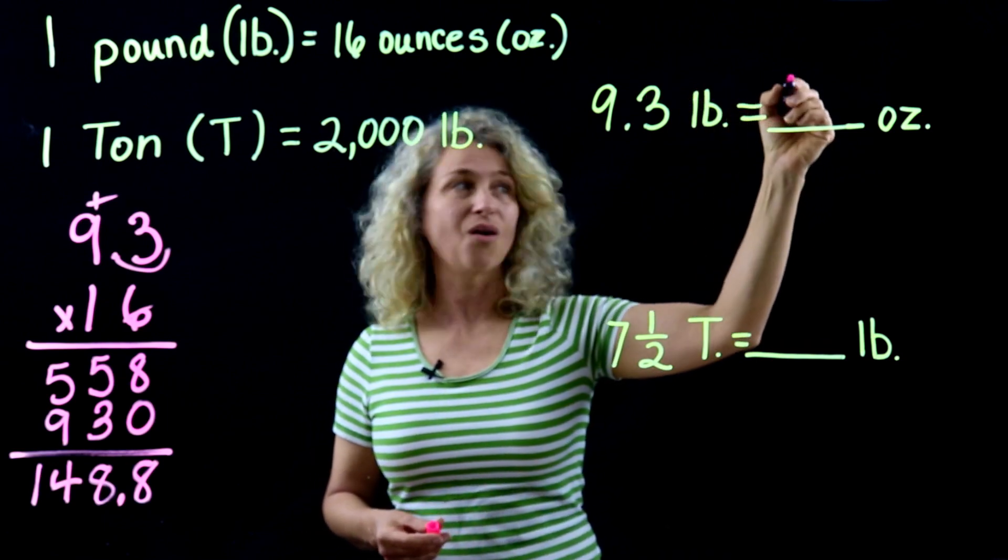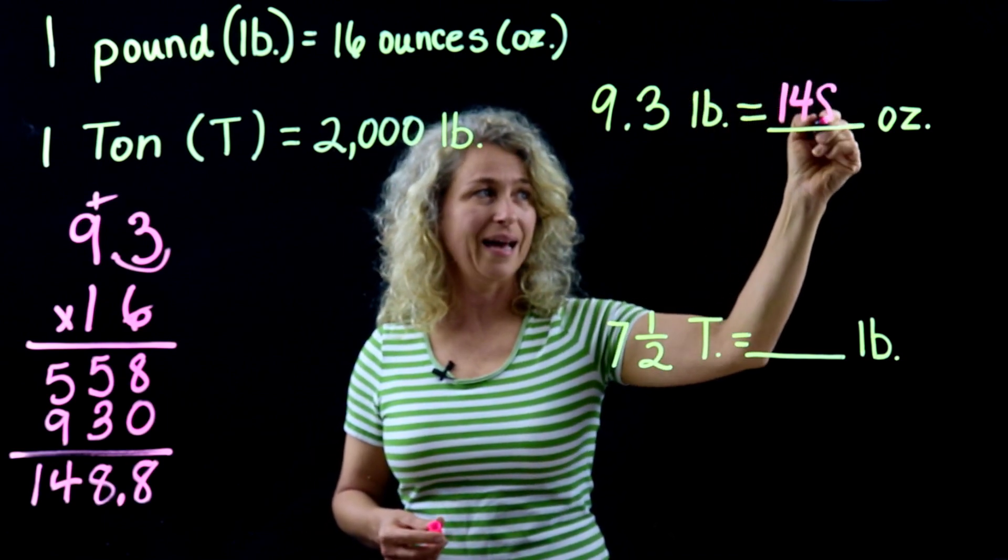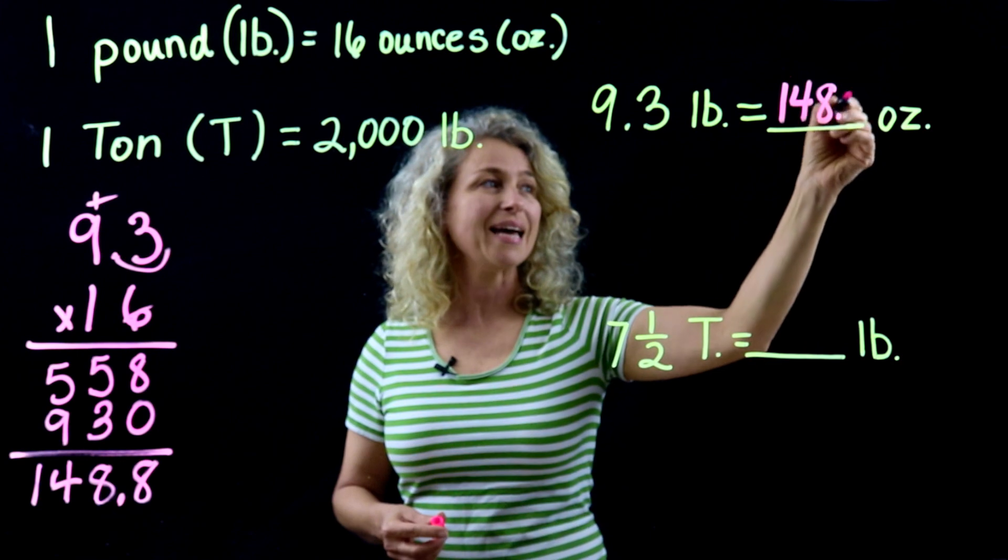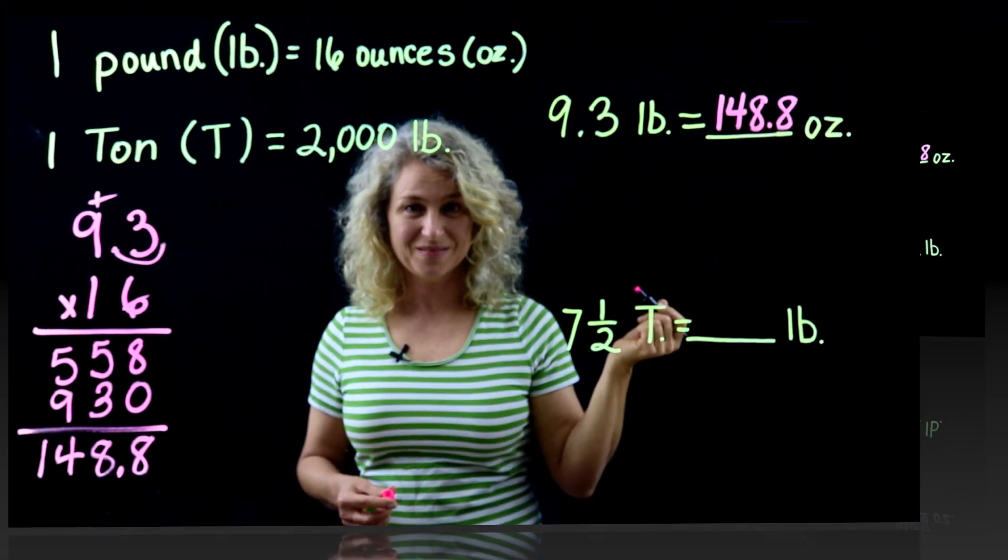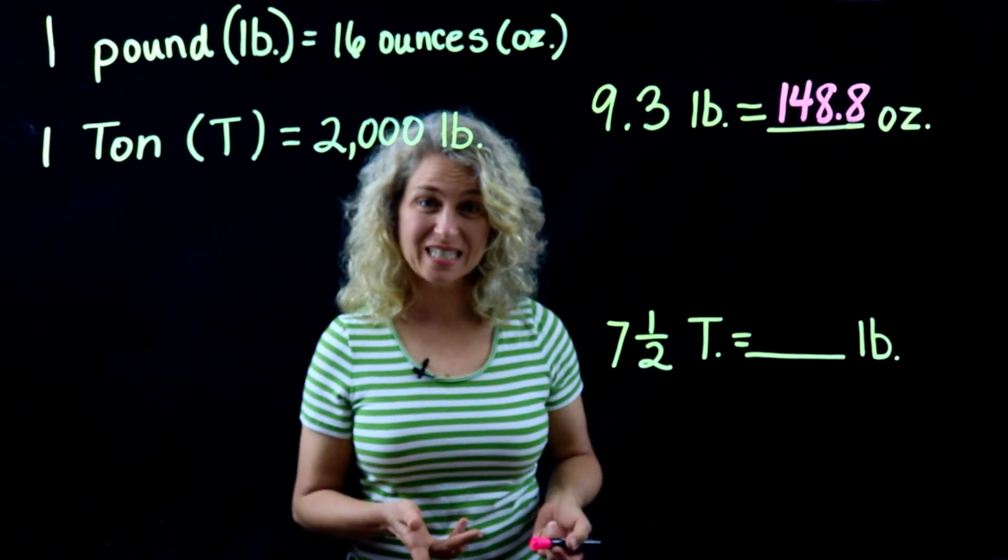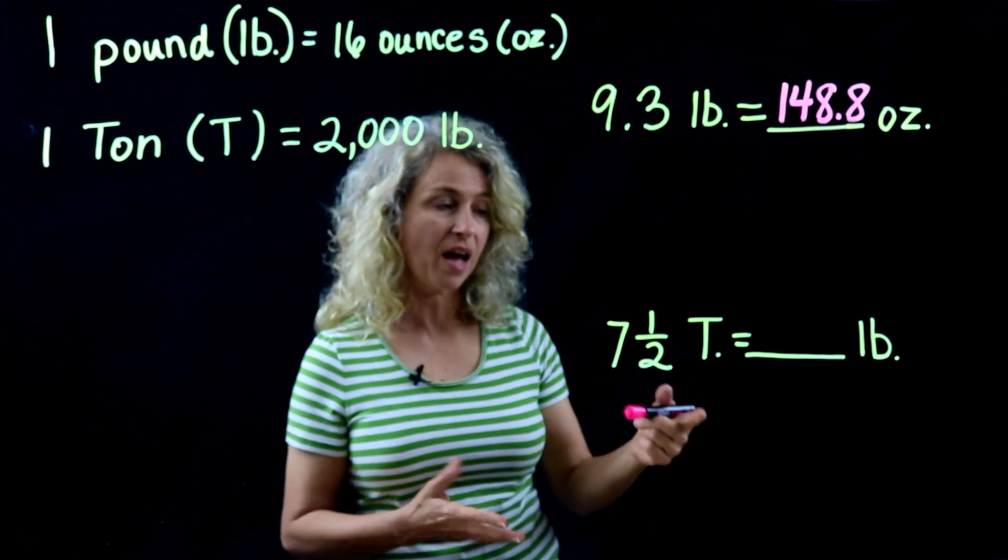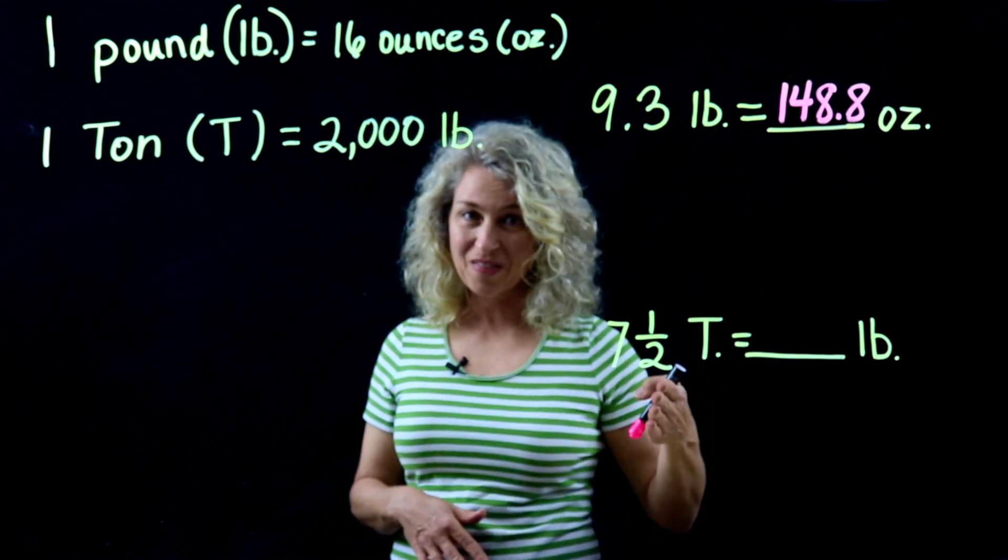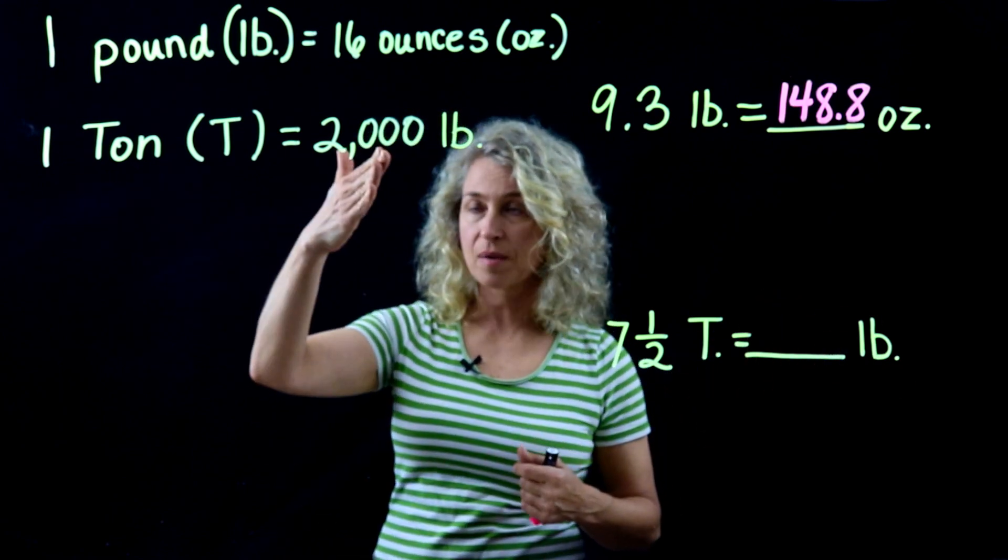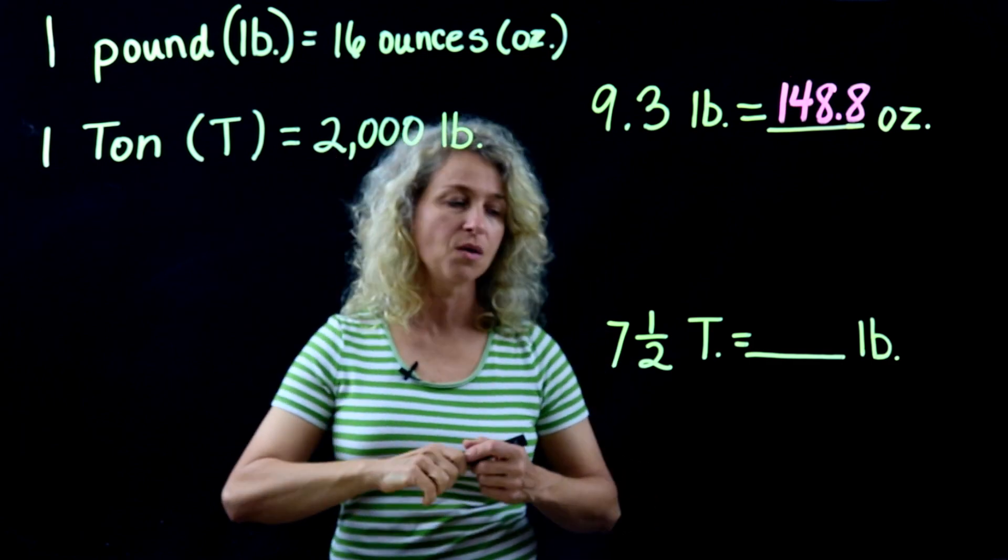All right, so for this next example we have 7 and a half tons and we're going to convert that to pounds. Tons to pounds. All right, so now we know that 7 times 2,000...